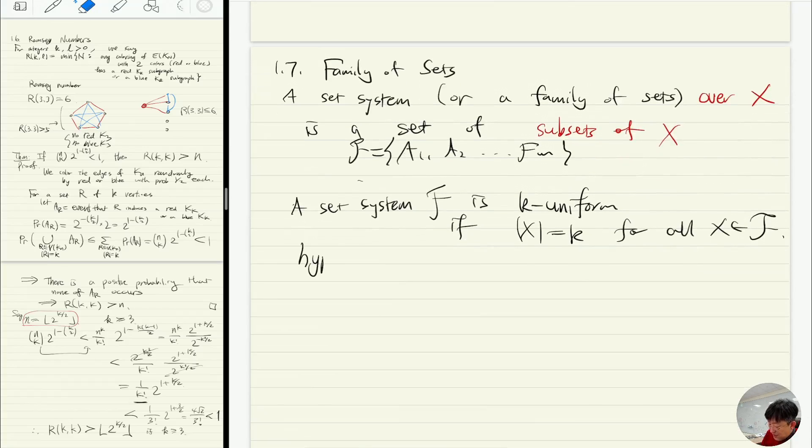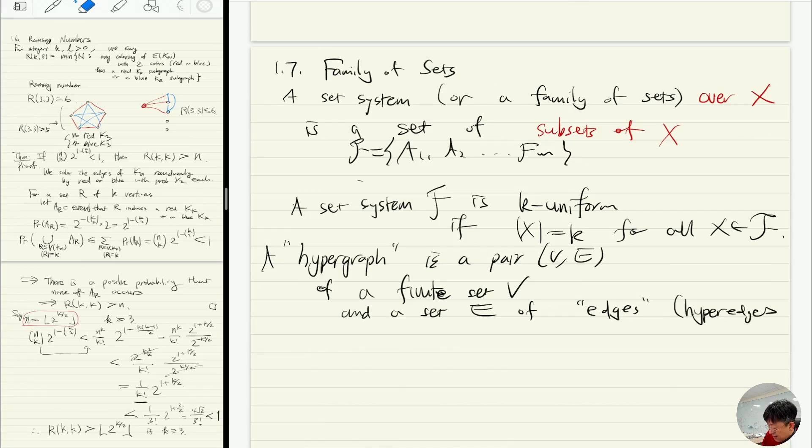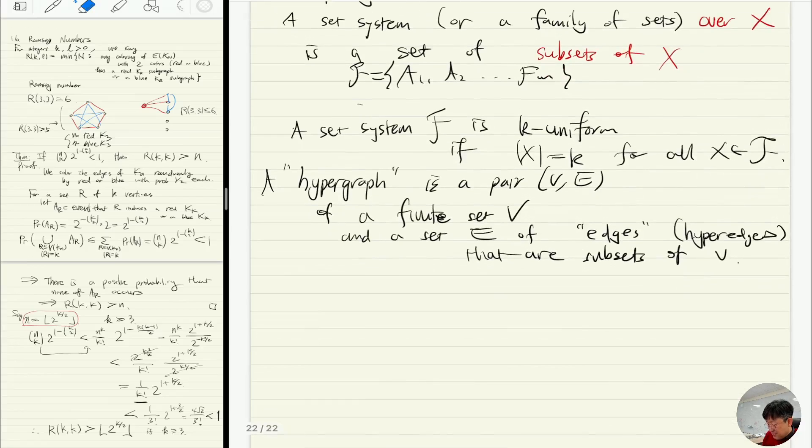This is related to something called the hypergraph. A hypergraph is a pair (V, E) of a finite set V and a set E of edges, sometimes called hyperedges, that are subsets of V. The difference between hypergraphs and graphs is that in a graph, each edge just has two vertices—I'm talking about simple graphs—but in a hypergraph, an edge could have many vertices.